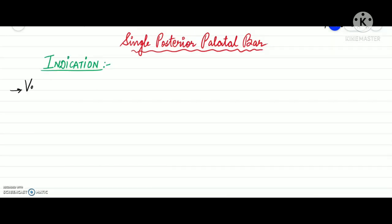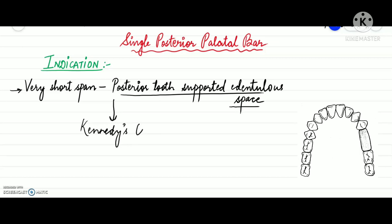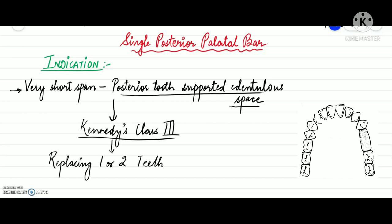The single posterior palatal bar is rarely indicated in clinical practice. The only indication is for a very short span, posterior tooth-supported edentulous space — that means for Kennedy's class 3, limited to replacing just one or two teeth on each side of the arch.